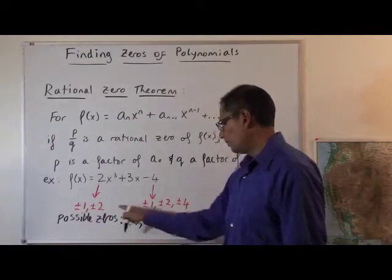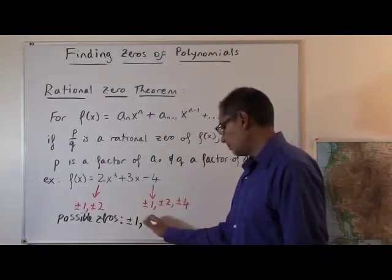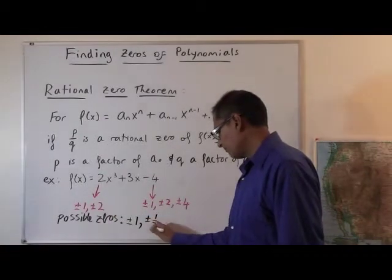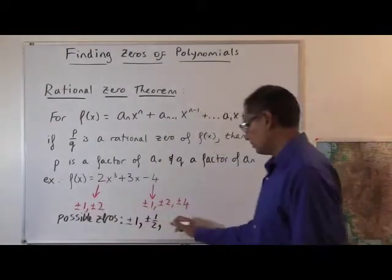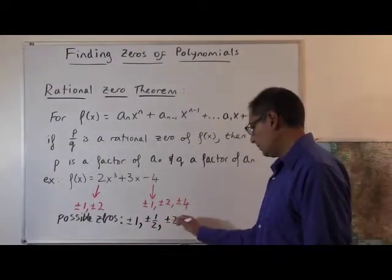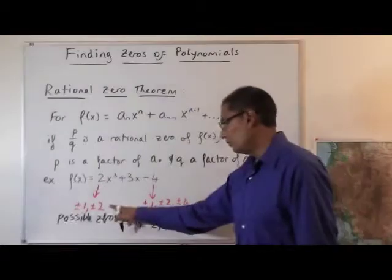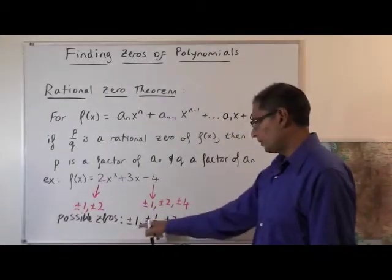And then plus or minus 1 over 2 is going to give me plus or minus 1 half. And then plus or minus 2 over 1 is going to be plus or minus 2. And plus or minus 2 over 2 is plus or minus 1, but I already wrote that.